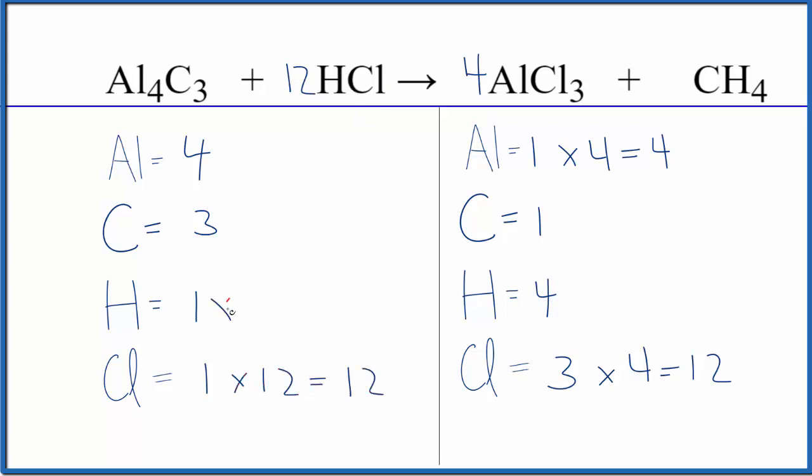Then one hydrogen times 12, that would give us 12 hydrogens. At this point, if we put a three in front of the methane, one times three, that balances the carbons. And four times three, that gives us 12 hydrogen atoms and we're done.